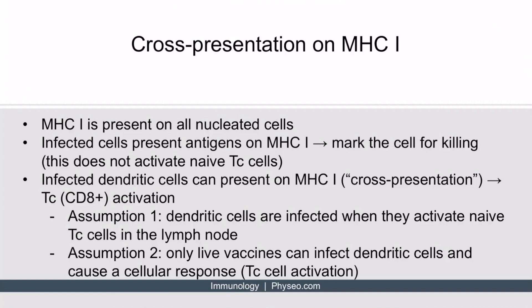Dendritic cells activate T cells using MHC class 2 for helper T cells and MHC class 1 for cytotoxic T cells. MHC class 1 is present on all nucleated cells, and infected cells will present antigens on their MHC class 1 to mark that cell for killing — the cytotoxic T cell will recognize this and mark the cell for killing.